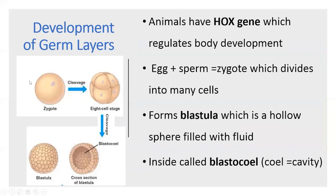Now let's talk about the development of germ layers. All animals have a HOX gene which regulates body development, which is why they all follow a similar plan. It begins with egg and sperm fertilizing to form a zygote, which undergoes division and starts cleaving into multiple cells — eventually hundreds — to form a blastula, which is just a hollow sphere. The hollow part is filled with fluid called the blastocoel. Remember, 'coel' just means cavity.